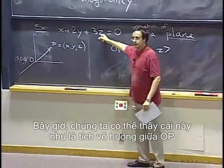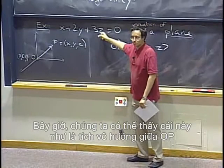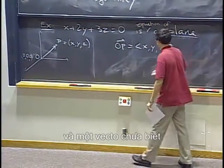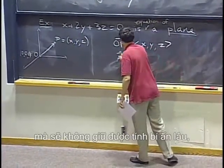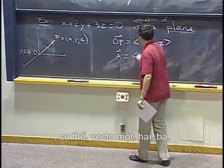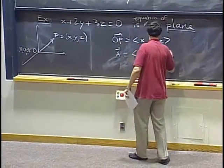Now we can think of this as actually a dot product between OP and a mysterious vector that will remain mysterious for very long, namely the vector 1, 2, 3.